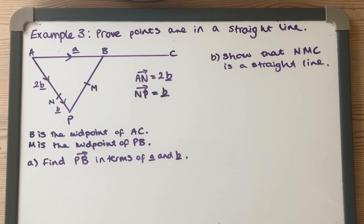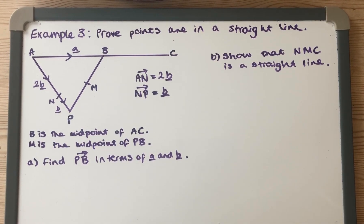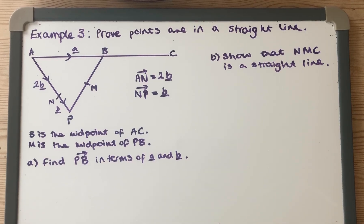Hello again Year 10. I've got my final example for you to do with vector proofs, and this is about proving that points are in a form, a straight line, or they're on a straight line.